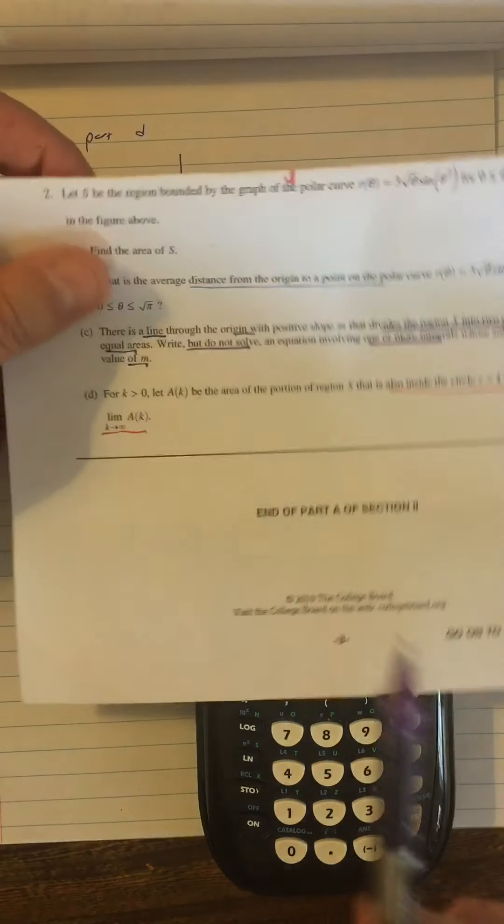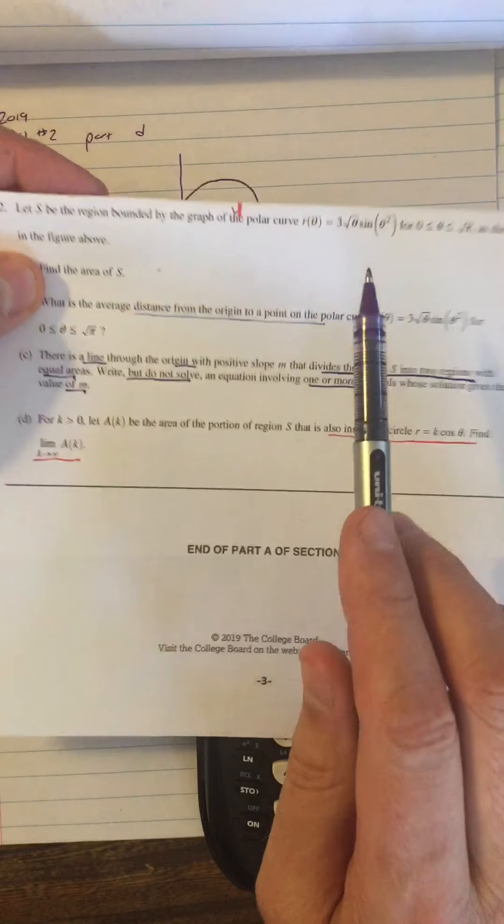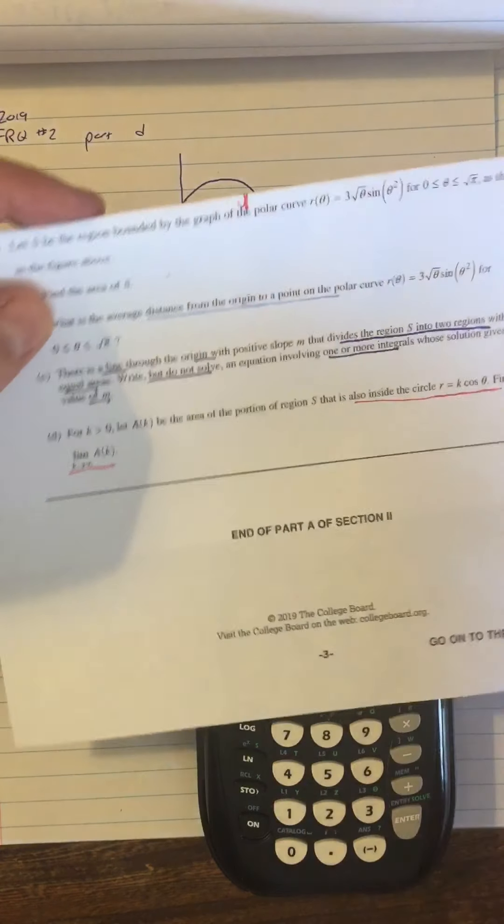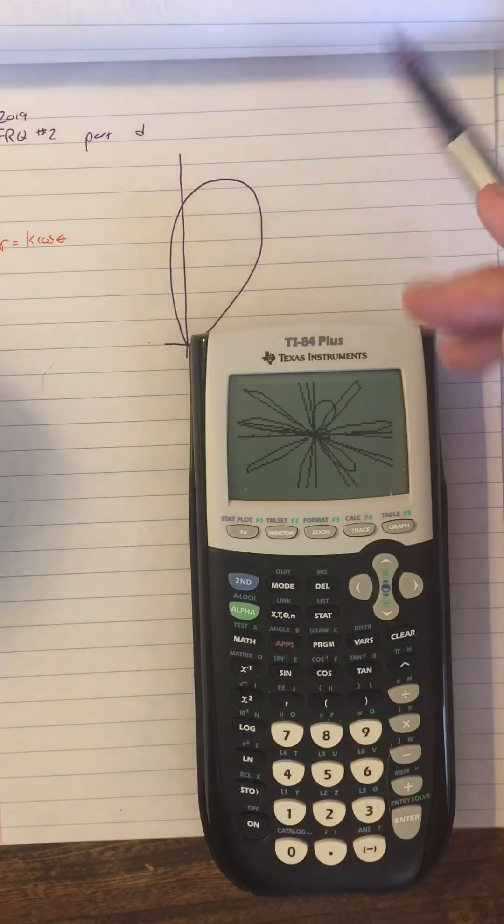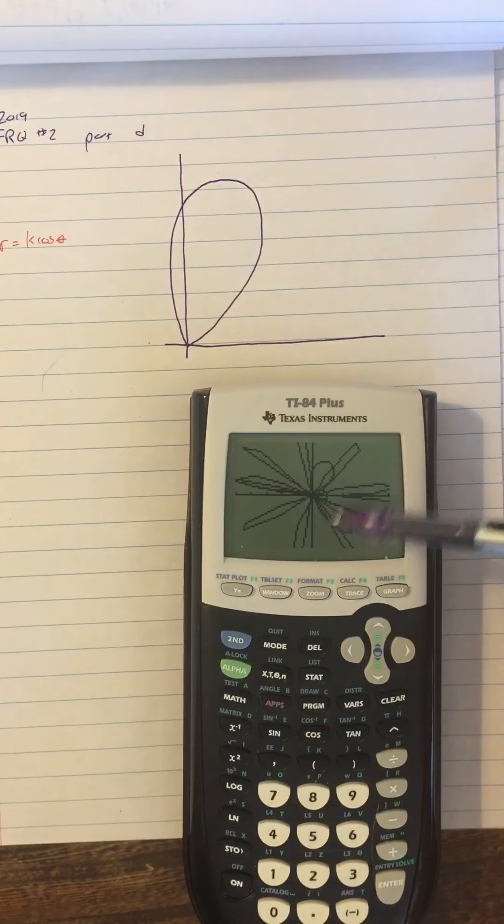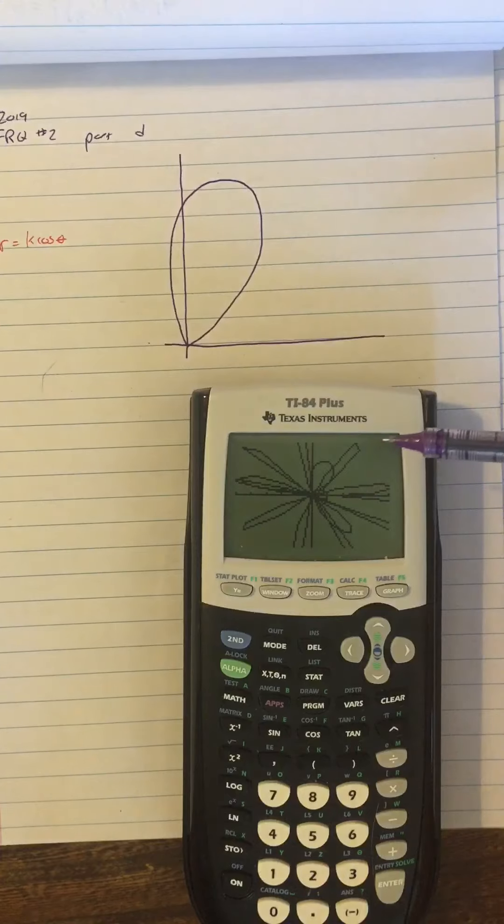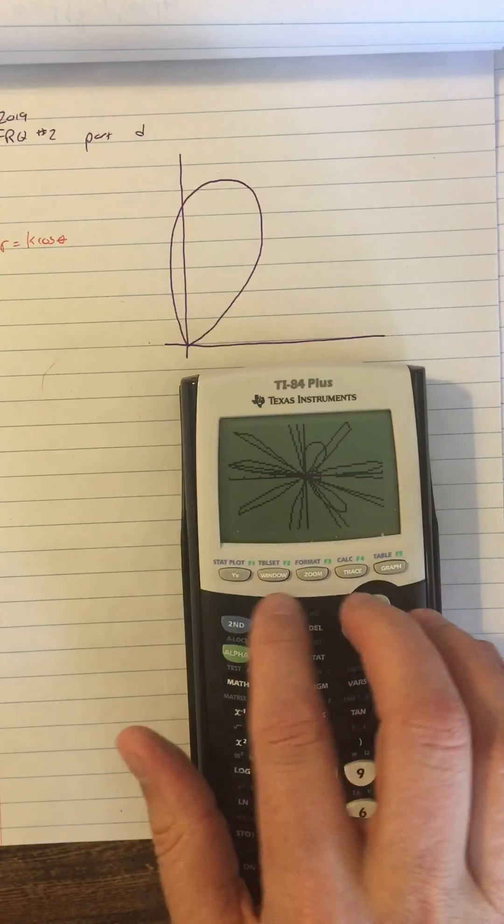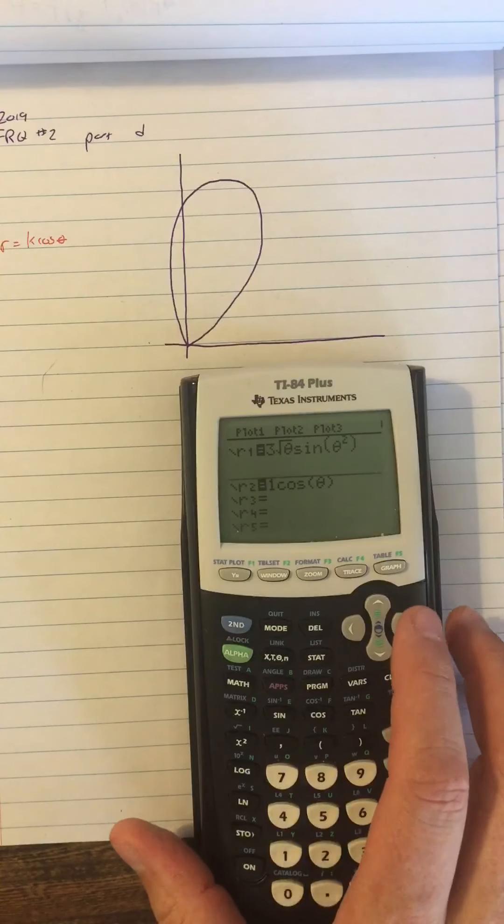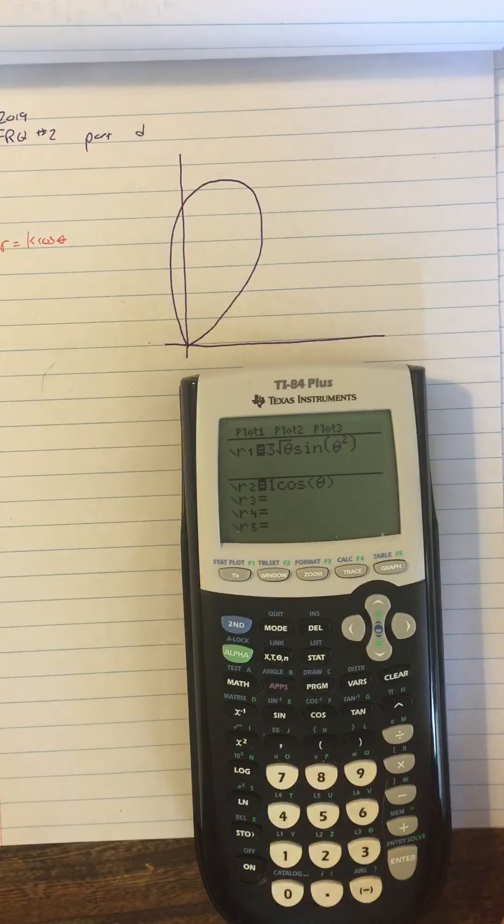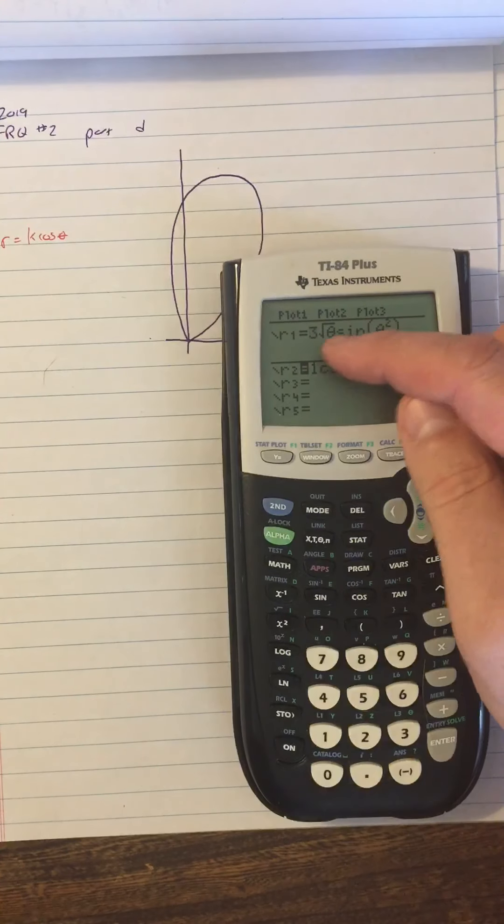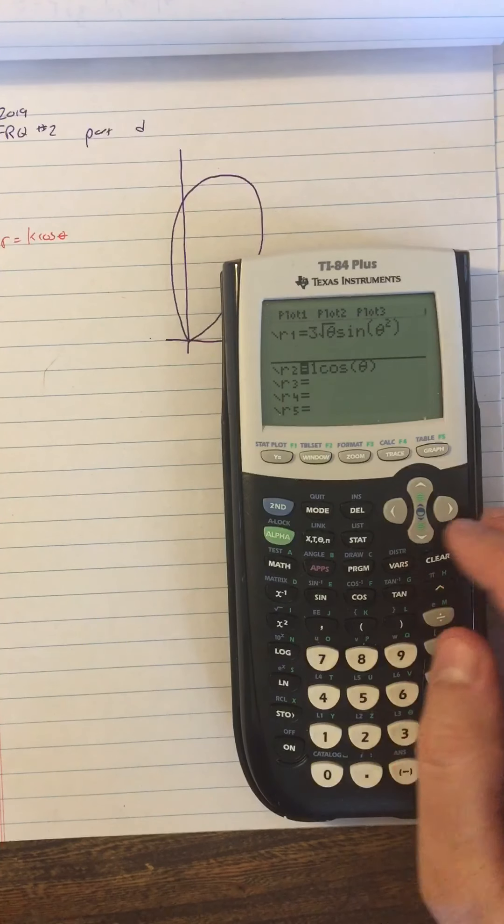Well, what's going on is that this equation that they gave us that only has theta zero to square root pi looks all nice as long as my theta doesn't go past square root pi. But what we're seeing here is what happens to that function when theta is more than square root pi and we get this weird graph. So the thing to do about that is to go back to our y equals window and just turn that graph off. So I'm going to highlight the equals sign, I'm going to press enter to turn it off.